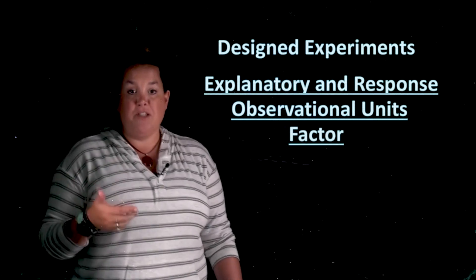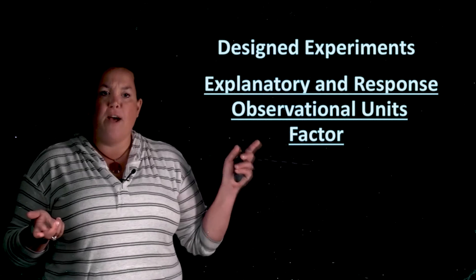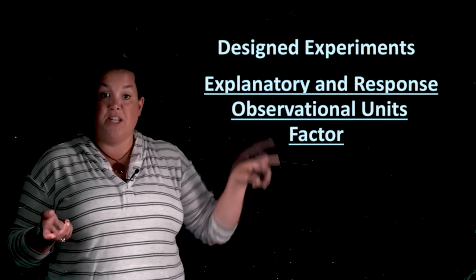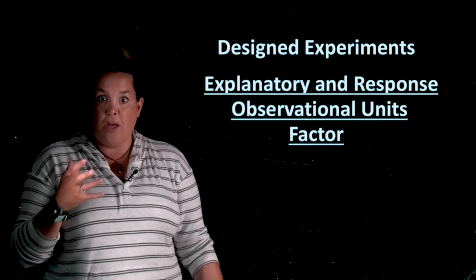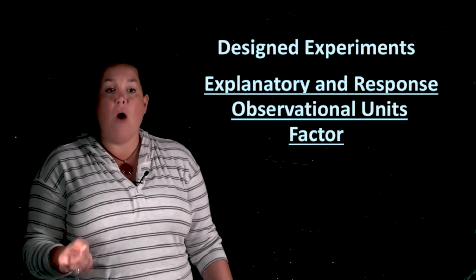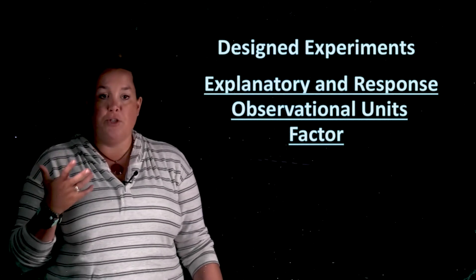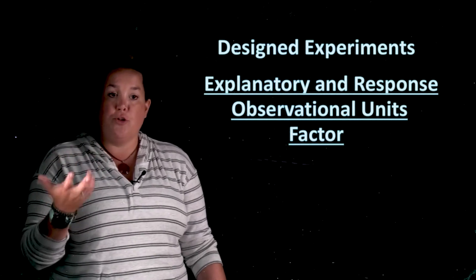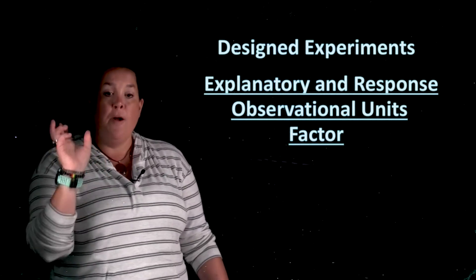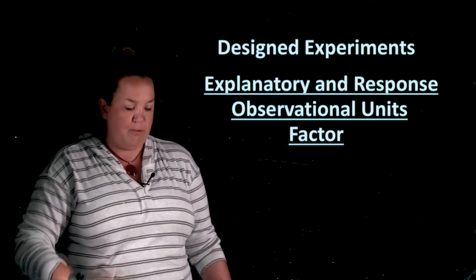The next thing we have is factor. Now factor can be kind of confusing because actually factor and explanatory variable in a designed experiment, they're the same thing. So the factor is that thing that you're most interested in, seeing how it affects the response variable. It's the primary piece of information that you're interested in and it tends to be what the researcher is trying to control or randomly assign people to.